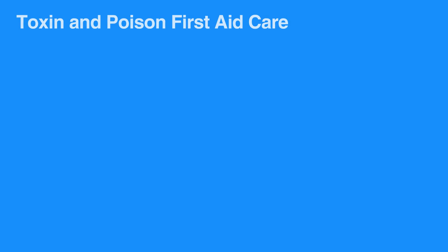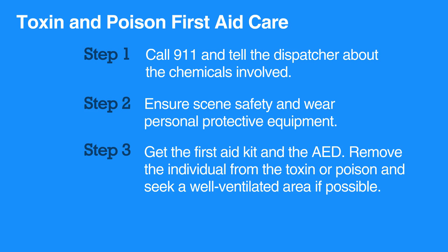To provide first aid care for toxin and poison exposure, first call 9-1-1. Tell the dispatcher about the chemicals involved. Ensure scene safety and wear personal protective equipment. Get the first aid kit and the AED.